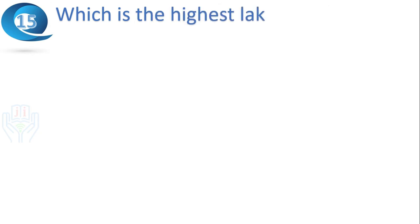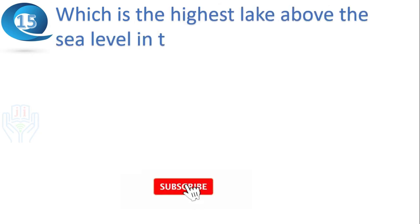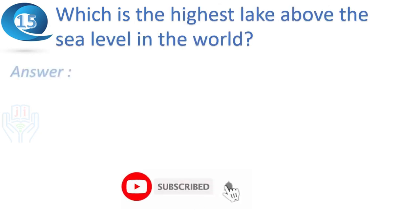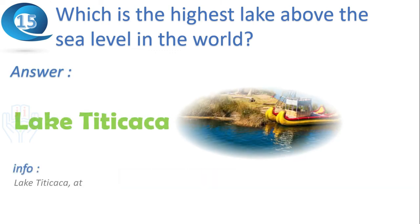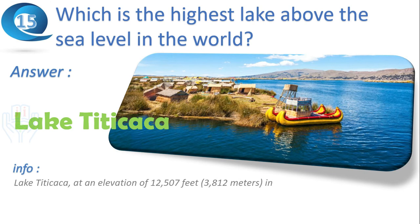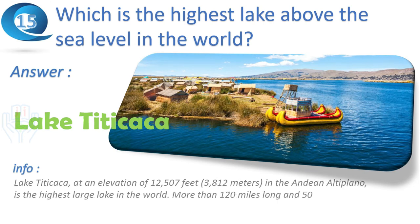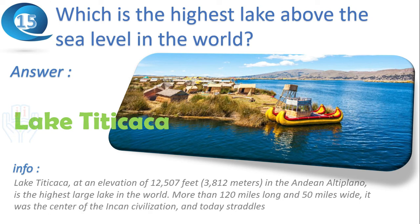Next question: which is the highest lake above sea level in the world? Answer: Lake Titicaca. At an elevation of 12,500 feet in the Andean Altiplano, it is the highest large lake in the world — more than 120 miles long and 50 miles wide. It was the center of the Inca civilization and today straddles the boundary between Peru and Bolivia.